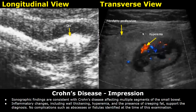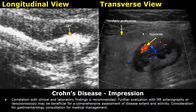Impression: sonographic findings are consistent with Crohn's disease affecting multiple segments of the small bowel. Inflammatory changes including wall thickening, hyperemia, and the presence of creeping fat support the diagnosis. No complications such as abscesses or fistulas identified at the time of this examination. Correlation with clinical and laboratory findings is recommended. Further evaluation with MR enterography or ileocolonoscopy may be beneficial for a comprehensive assessment of disease extent and activity. Consideration for gastroenterology consultation or medical management is advised.